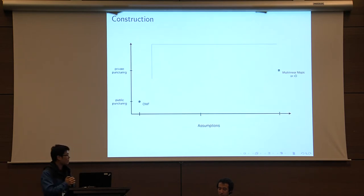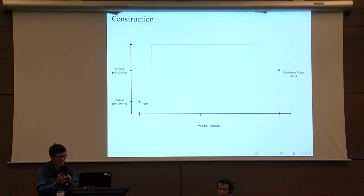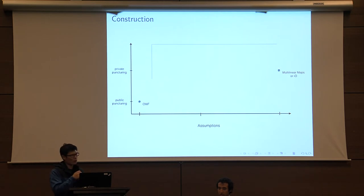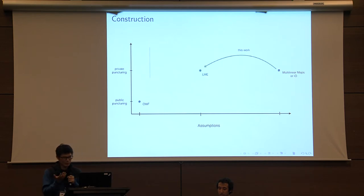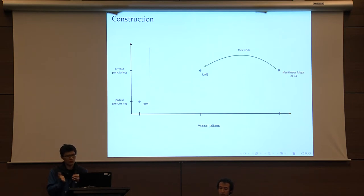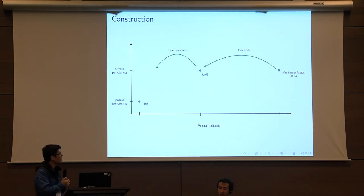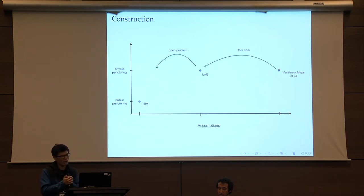Prior to this work, puncturable PRFs had a very extreme state of affairs: to get public puncturing, you only need one-way functions using the GGM tree-based construction, but to get private puncturing, you had to go all the way to multi-linear maps or IO — as in the original BLW paper. This work pushes the minimum assumption required for private puncturing down to just LWE, constructing it from lattices. The natural open problem is whether we can push further: since public puncturing requires only one-way functions, can we get private puncturing from one-way functions as well?